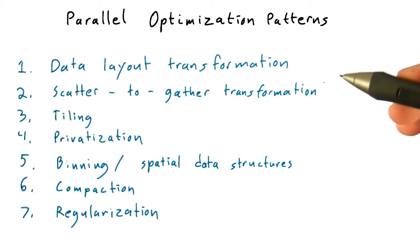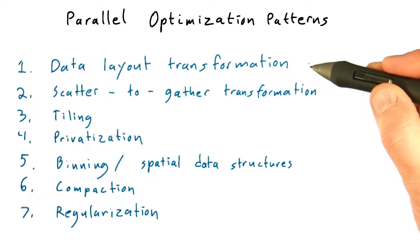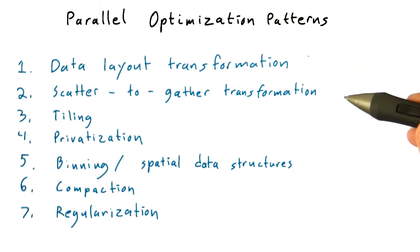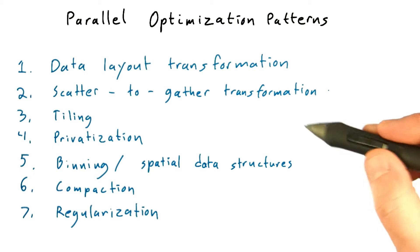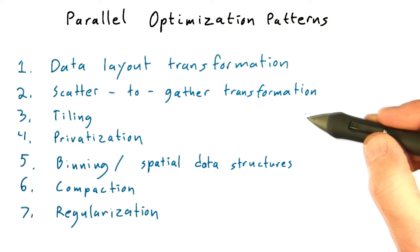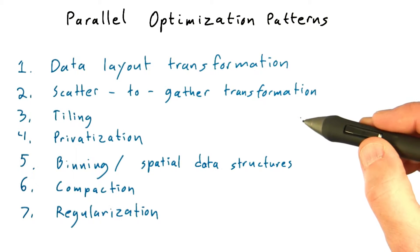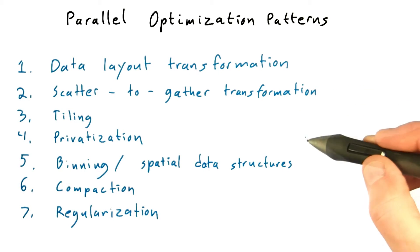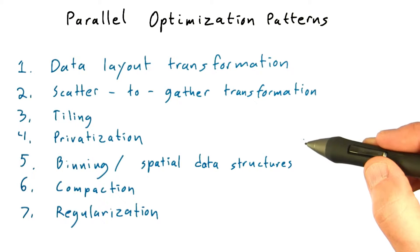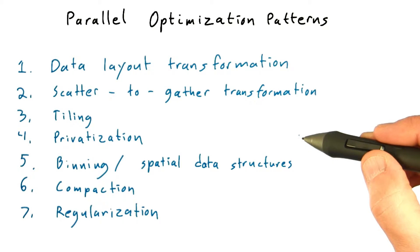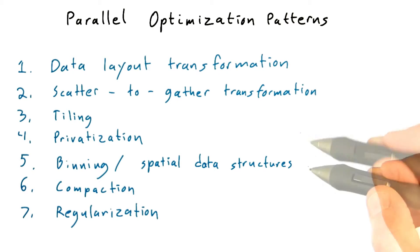Okay, and that's Stratton's taxonomy. Data layout transformation, transforming scatter patterns to gather patterns. Tiling, so that we can share input upon multiple threads. Privatization, so we can avoid sharing output as long as possible.